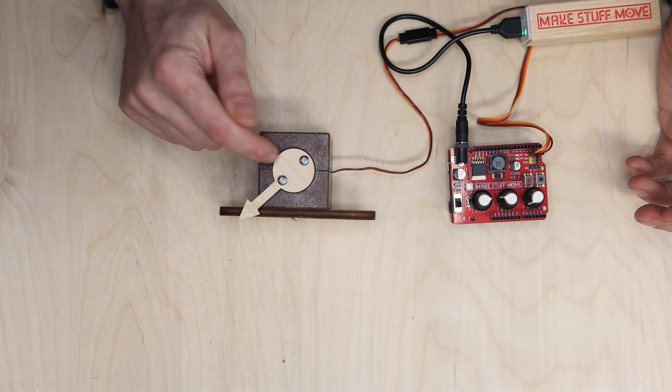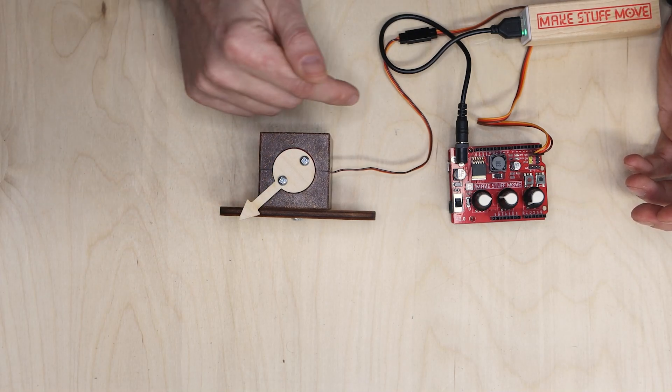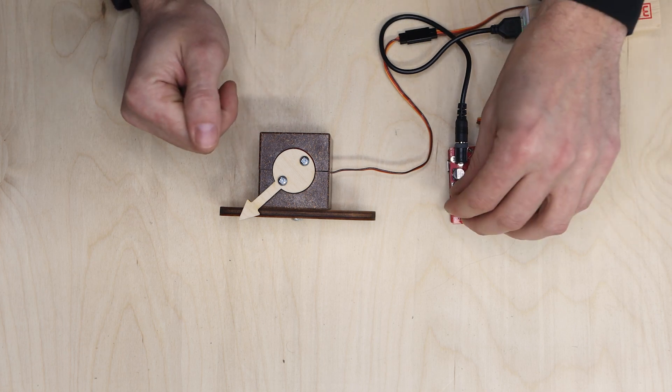Okay, so sometimes when you're working with positionable servos like this, they're gonna swing in an area that you don't want them to swing, and you might need to adjust that. So let's see here.